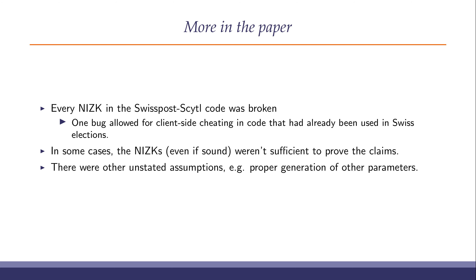There's a lot more detail in the paper, with a bunch of other attacks along similar lines. Every single non-interactive zero-knowledge proof in the Swiss Post CITAL code was broken by essentially the same reason — not all of these led to exploitable attacks. One bug allowed the client to cheat, and that was important to Switzerland because that opportunity had already been available in code the Swiss had used in previous elections in a precursor system. In some other cases, the zero-knowledge proofs, even if they had been patched to be sound, were not sufficient to prove the claims necessary to prove the accuracy of the election result. There were a bunch of other unstated assumptions like proper generation of parameters that turned out to be important when thought about carefully.